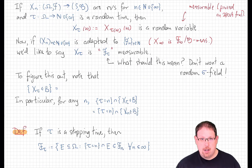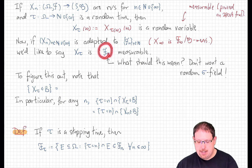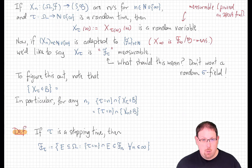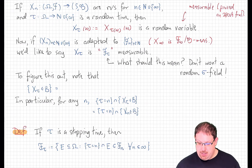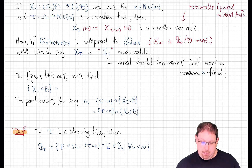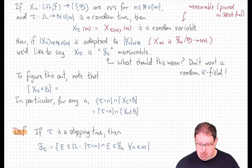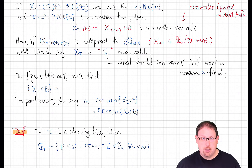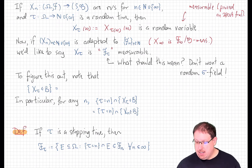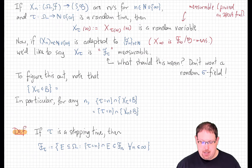But what could we mean by F_tau? One thing we're not going to mean by it is a random sigma field — that just introduces too much randomness into the problem. The underlying sigma field is a deterministic structure. To figure out what this F_tau should mean for this to work, let's look at what a canonical set in F_tau should be. F_tau is supposed to be constructed so that x_tau is measurable.